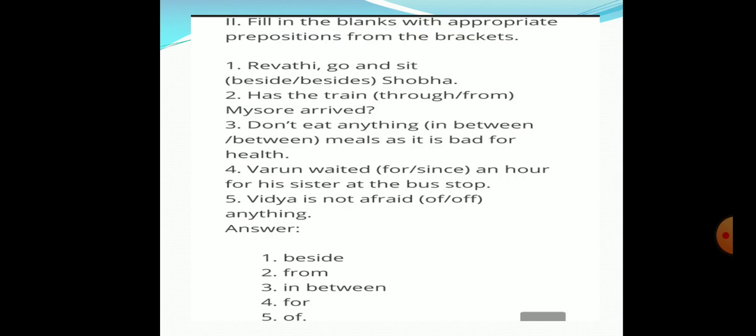Fourth one, it has been raining. It has been raining since three hours. It has been raining for three hours. Next one is, distribute the mangoes between all the students. Between is wrong here. Among will come there.